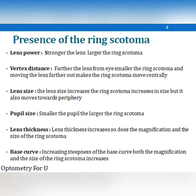The factors that lead to ring scotoma development are lens power — the higher the power, the greater the ring scotoma. Vertex distance — placing the lens closer to the eye reduces the scotomatous region. A larger lens size results in a greater scotomatous region. A smaller pupil increases the ring scotoma. The base curve is also a factor affecting ring scotoma development.